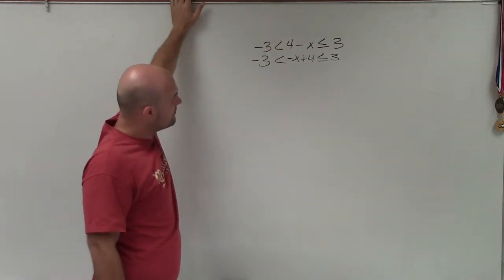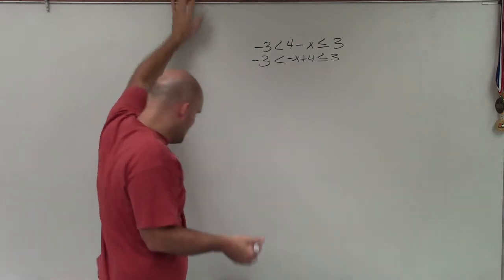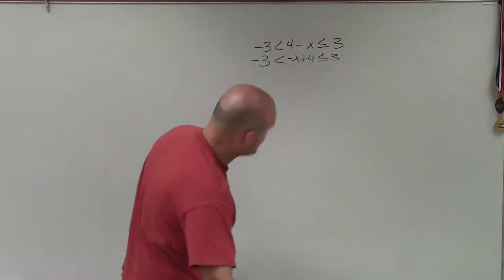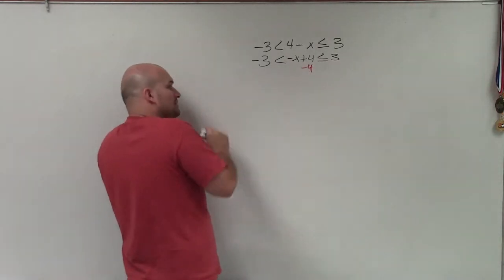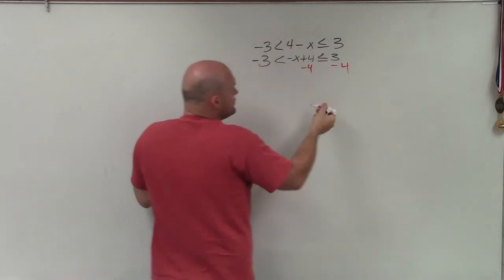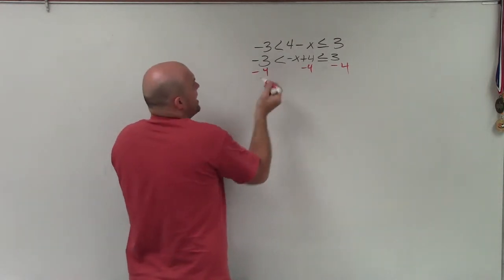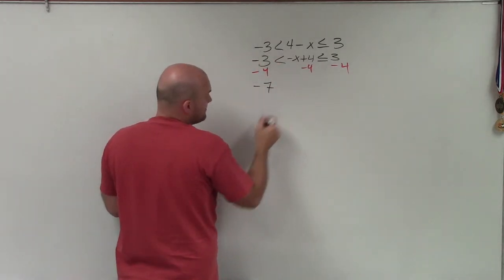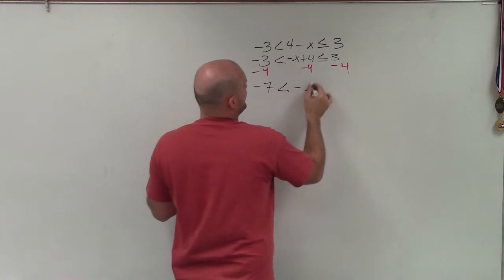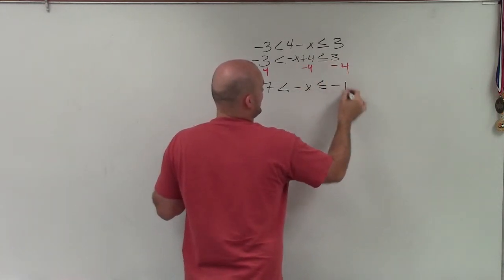So now what I'm simply going to do is use my inverse operation. So the first inverse operation I want to do is undo addition and subtraction. So I'll subtract the 4. Now, usually we say whatever you do on the left side, you do on the right side. Well, whatever you do on the inside of your compound inequality, you've got to do to the outside on both sides. So -3 - 4 is now a -7, less than -x, less than or equal to 3 - 4, is going to be a -1.